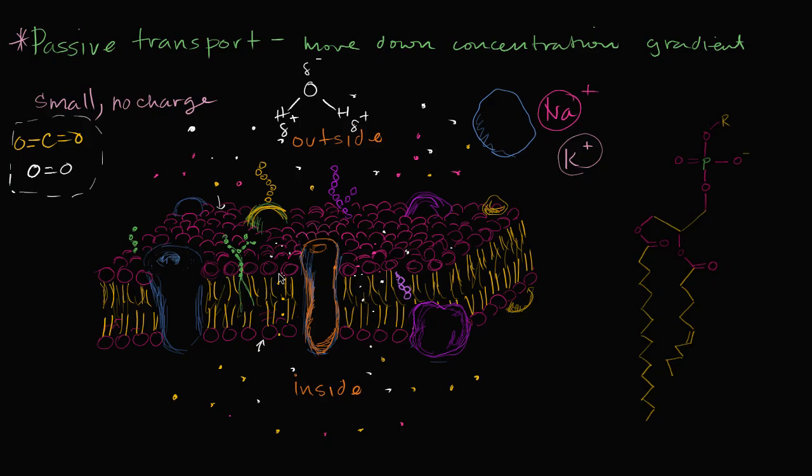They are small enough to kind of get through the little gaps here, and then since they have no charge or polarity, they're going to be fairly indifferent as they pass through. And then we talked about in between, you have things like water molecules, which are small enough to pass through the gaps, but they have some polarity, so they're not going to be able to get through super easily, but they will be able to seep through.